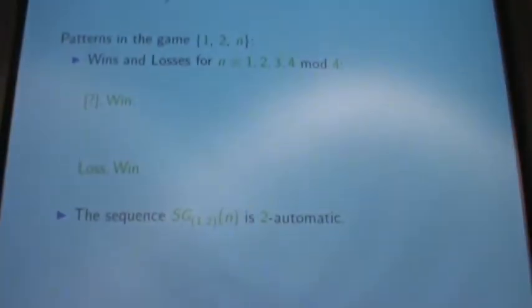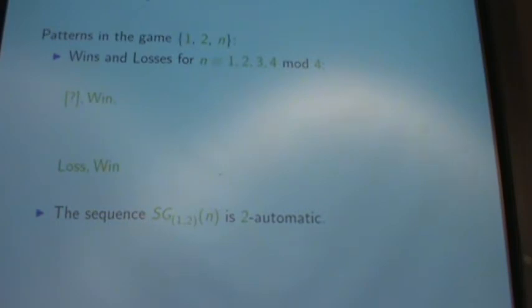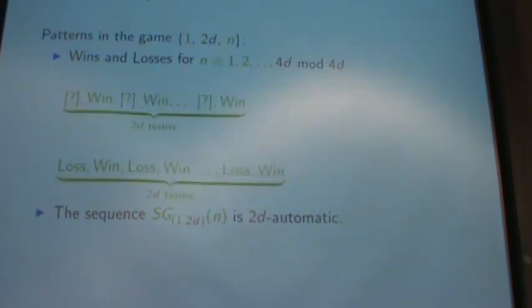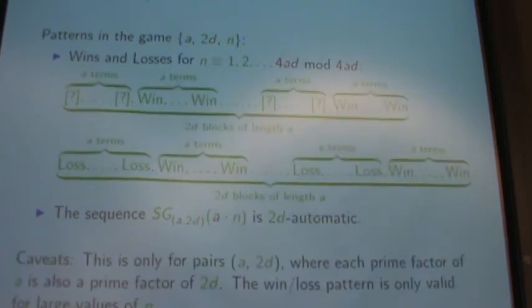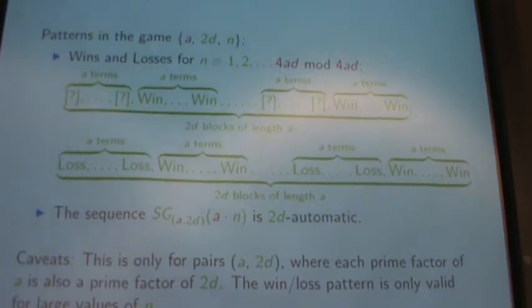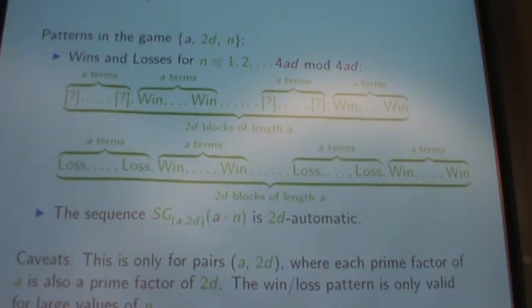So in the final summary: the results that seemed very specific to subtract 1 and divide by 2 actually hold for a pretty wide class of these games. If we move to subtracting an arbitrary even number, we get this long alternating block instead of just two terms, and we keep the automatic property. There is the caveat that this only really takes effect for large enough values of n.